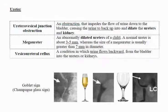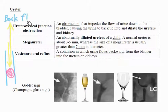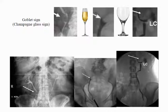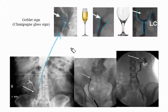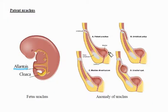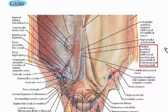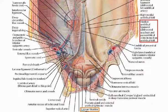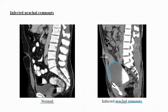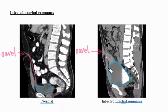The ureter is a tube that carries urine from the kidney to the urinary bladder; there are two ureters, one attached to each kidney. If a blockage occurs, the site shapes like a goblet or champagne glass on x-ray images. The urachus is a fibrous remnant of the allantois — a canal that drains the urinary bladder of the fetus and runs within the umbilical cord. Transitional cell carcinoma is a type of cancer that typically occurs in the urinary system and can also be found in the urachus.